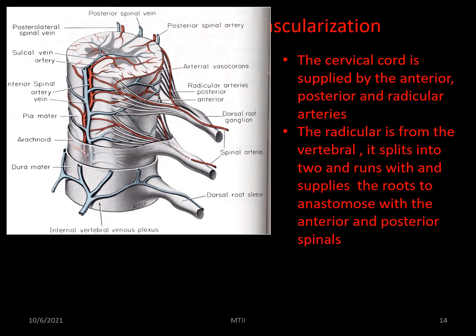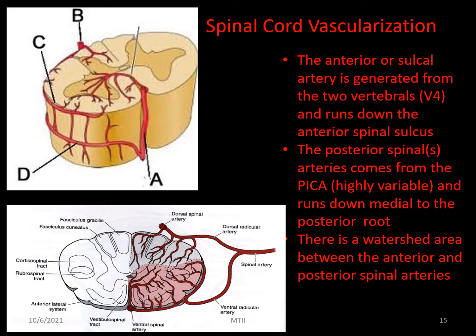The spinal cord is supplied by the anterior and posterior spinal arteries and local radicular arteries. In the neck, these radicular arteries come off the vertebral, run through the vertebral foramen and the spinal nerve, then split to run with each nerve root until they reach the cord, where they are anastomosed with the anterior and posterior spinal arteries. The anterior spinal artery arises from each V4 just as they form, and runs down the anterior median fissure or sulcus of the spinal cord. The origin of the posterior spinal arteries is highly variable but often comes from PICA, and each artery or sometimes pair of arteries runs down the medial side of the posterior root.